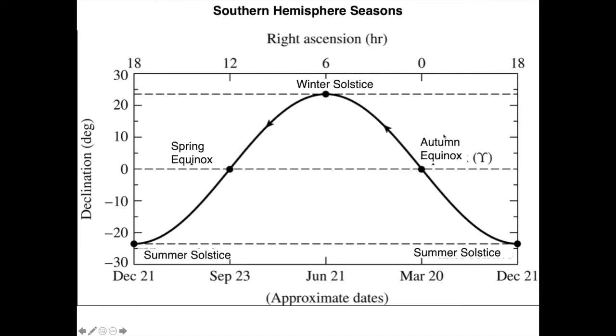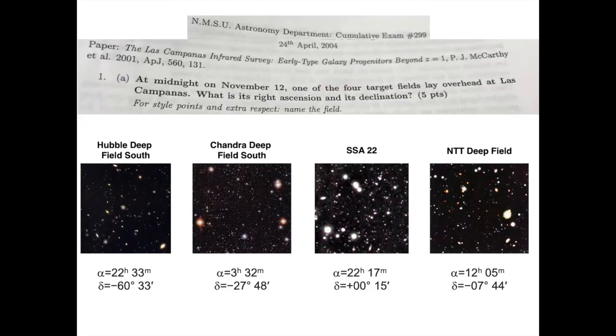A question that appeared again in Q&A: at midnight on November 12, one of the four target fields lay overhead at Las Campanas. What is its right ascension and its declination? There is information here that the latitude of Las Campanas is about 29 degrees south. It's in Chile.